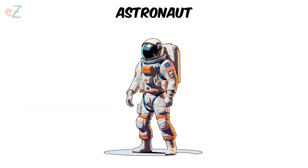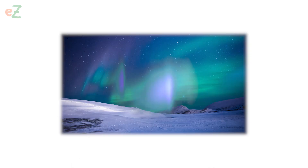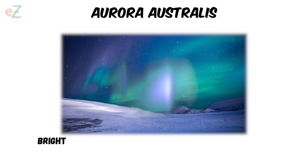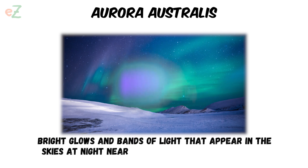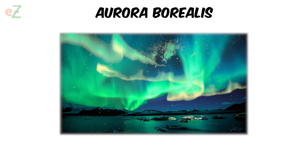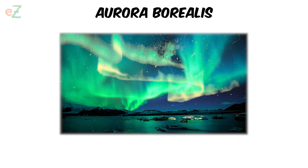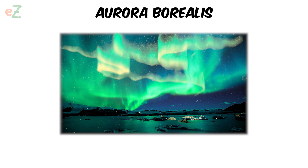Astronaut. A person trained to travel in a spacecraft. Astronomer. A scientist who studies the universe. Aurora Australis. Bright glows and bands of light that appear in the skies at night near the South Pole. They are also called the Southern Lights. Aurora Borealis. Bright glows and bands of light that appear in the skies at night near the North Pole. They are also called the Northern Lights.